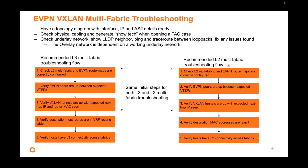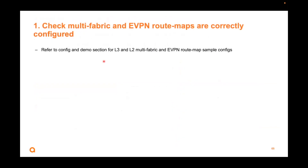For L2 multi-fabric troubleshooting, it's very similar — the first three steps are the same as L3. The difference is that instead of checking the routing table, you check the MAC table for L2. Make sure the MAC addresses are seen. From the host perspective, make sure they can communicate on the same subnet. Config-wise it's very similar, except for L2 you need to add the additional config to disable split horizon. Make sure your peers are up and tunnels are up for the data plane. We have full configs you can refer to in the config and demo section.